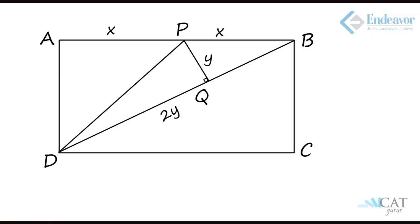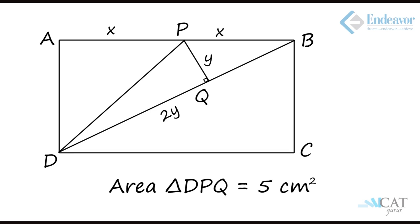Let us look at another interesting question based on the concept of quadrilateral and triangle both. There is a rectangle ABCD with diagonal BD. There is a point P on AB which is the midpoint of AB, so AP and PB are each equal to X as mentioned in the diagram. There is a point Q on the diagonal BD where PQ is perpendicular. Triangle DPQ has an area of 5 square centimeters, and the ratio of PQ to DQ is 1 to 2. So if PQ is Y, DQ is 2Y, and we must find the area of the entire rectangle.